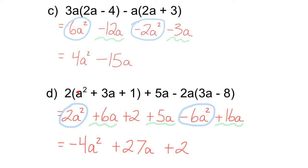In here, a squared is multiplied by 2 to get 2a squared. Positive 3a is multiplied by 2 to get positive 6a. Positive 1 times 2 is positive 2. This plus 5a is not being multiplied by anything, it's just a term on its own, so I'm just going to keep it as a term on its own. 3a is in brackets, multiplied by negative 2a in front — don't forget the negative sign, a lot of people forget that — so it's negative 6a squared. Then negative 8 times negative 2a: remember, negative times a negative is a positive, so this is positive 16a. We have like terms, so we combine them to get our final answer.